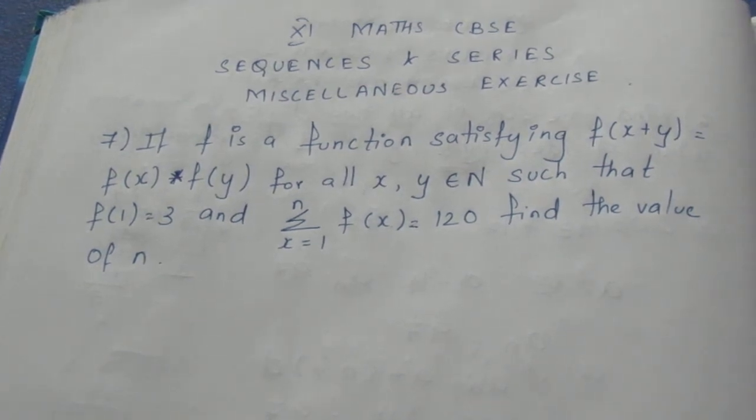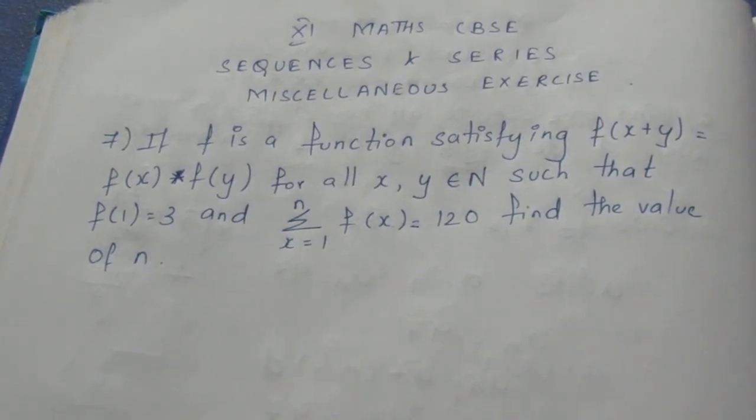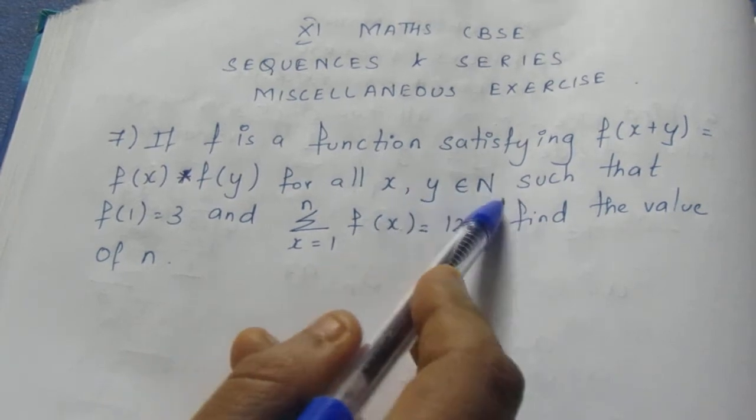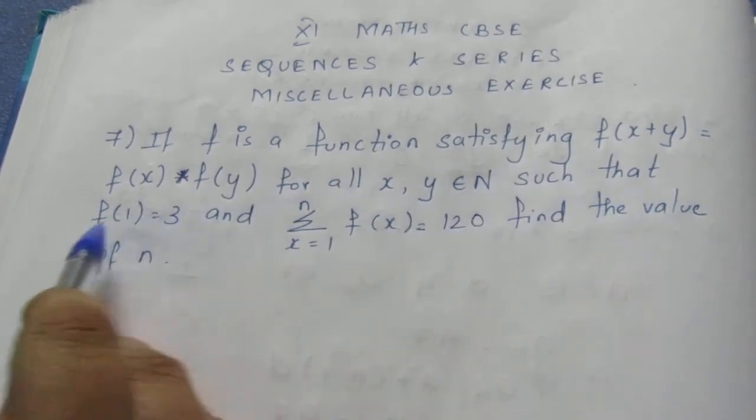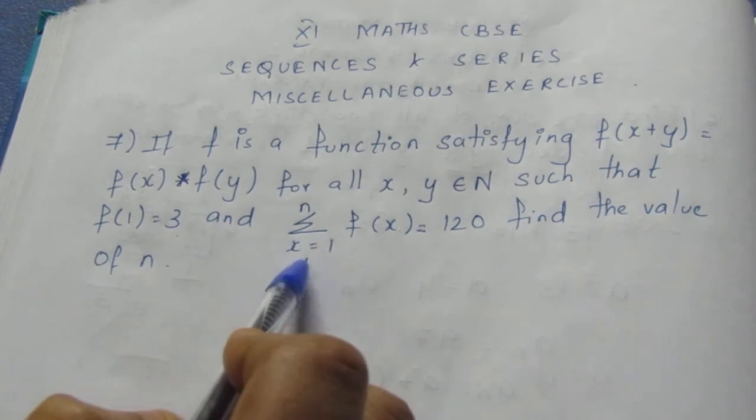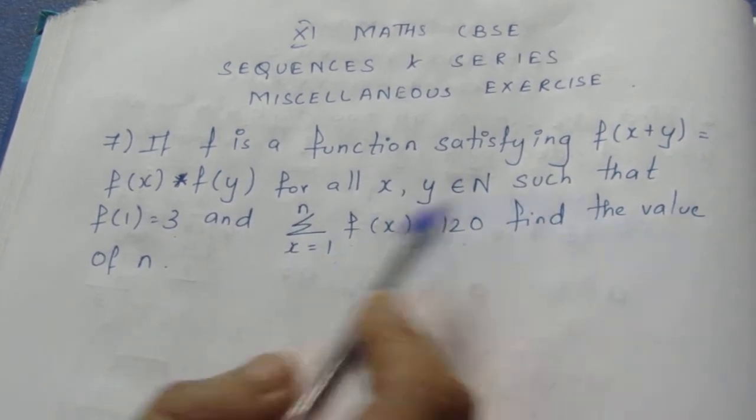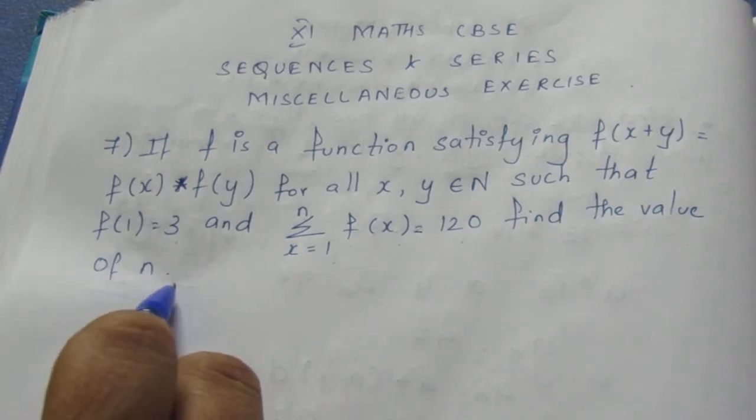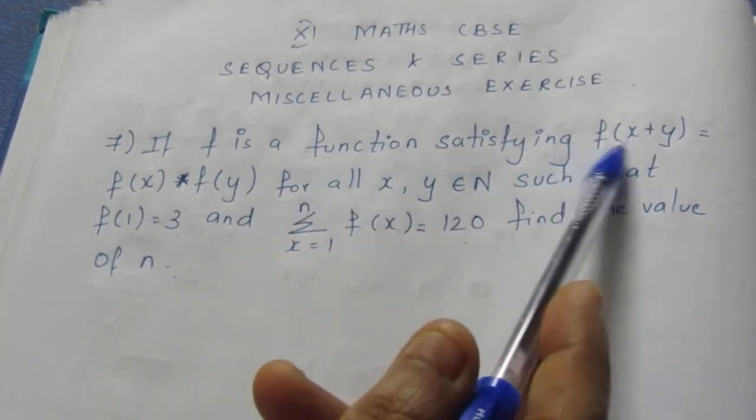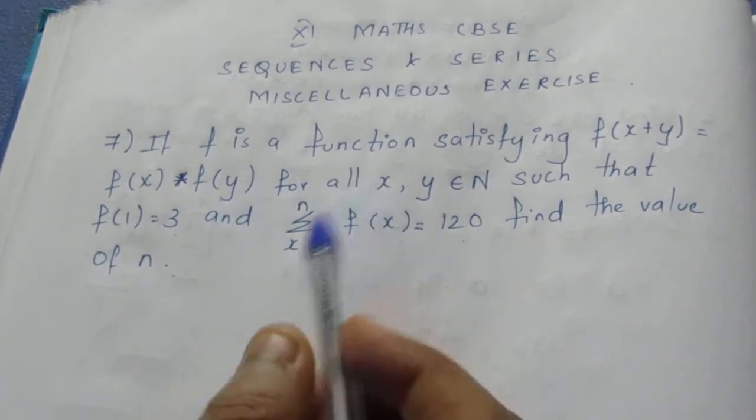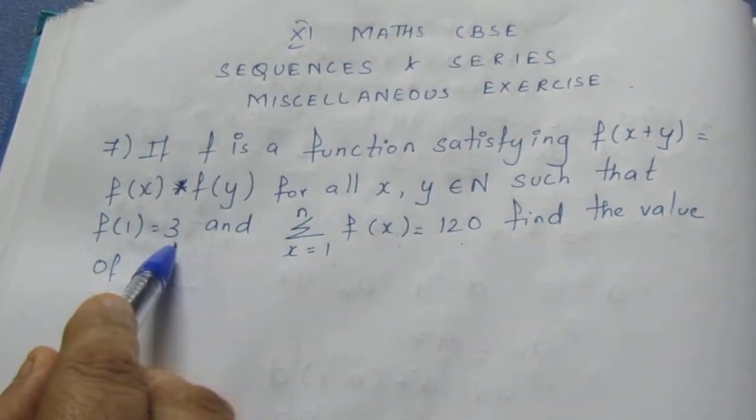Let's see the question. If f is a function satisfying f(x+y) equals f(x) times f(y) for all x, y belonging to natural numbers, such that f(1) equals 3 and summation from x equals 1 to n of f(x) equals 120, find the value of n. They have given one equation: f(x+y) equals f(x) times f(y), and they've also given the value of f(1).